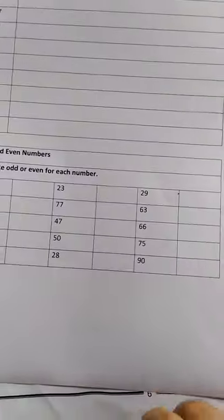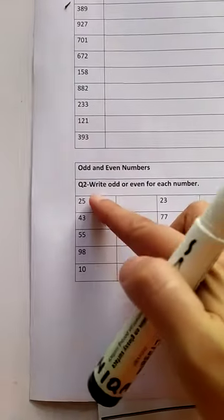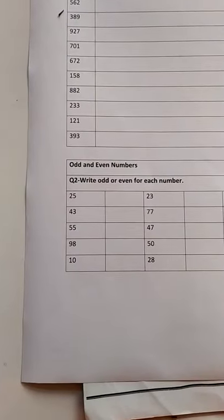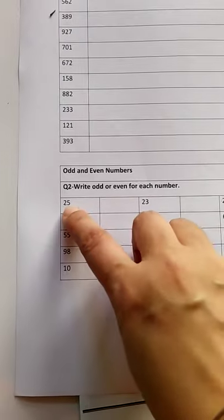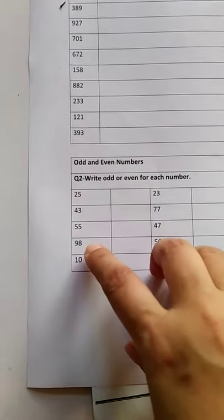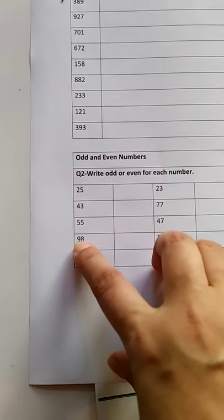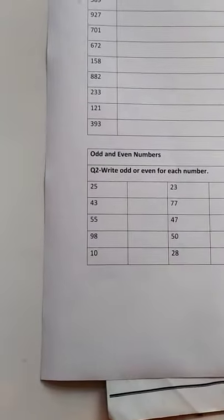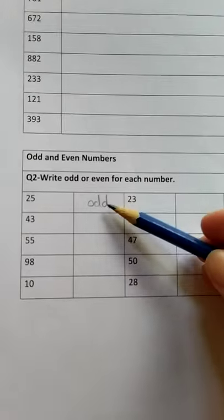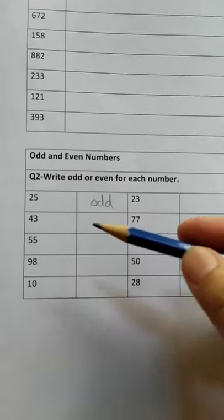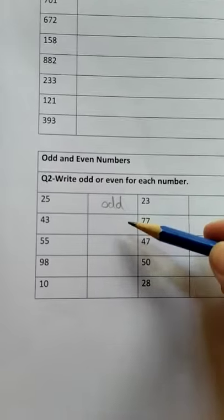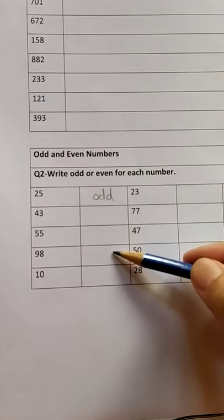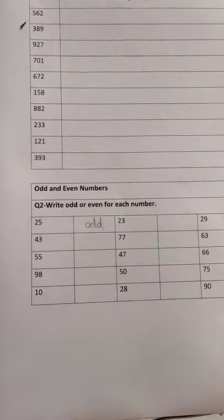Let's check the worksheet. This is your worksheet. And look at this. 25. 5 is at units place. And so the whole number is odd because 5 is an odd number. Now look at this 98. 8 is at units place. And 8 is an even number. So the whole number is even. You will write like this. Odd. And the numbers which are even, you will write the whole word E-V-E-N, even. So this is an odd number. This is an even number. You will write the whole word even.